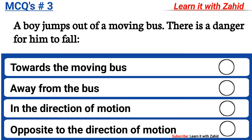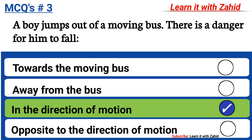A boy jumps out of a moving bus. There is a danger for him to fall: option A towards the moving bus, option B away from the bus, option C in the direction of motion, option D opposite to the direction of motion. The correct answer is option C, in the direction of motion.